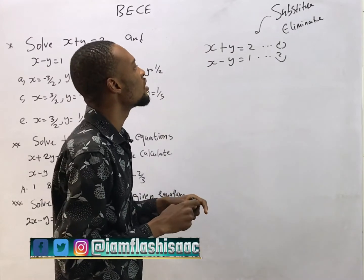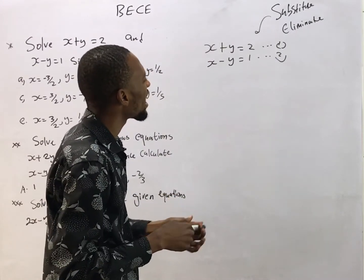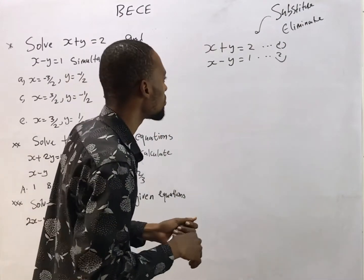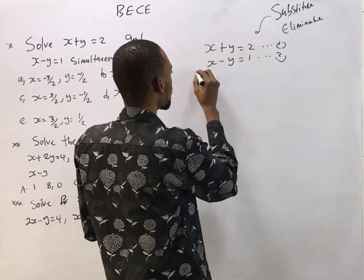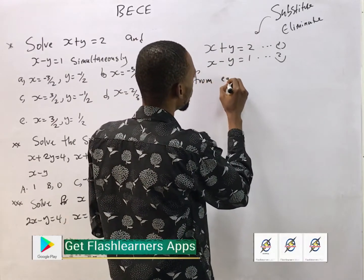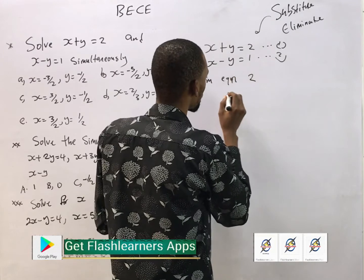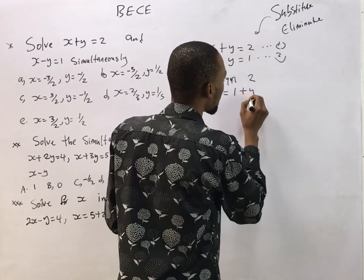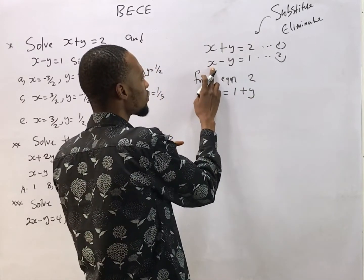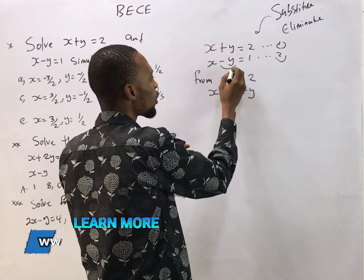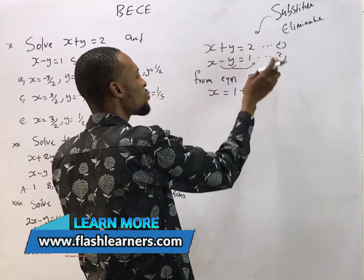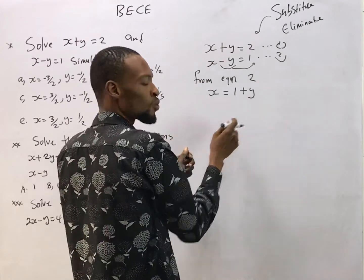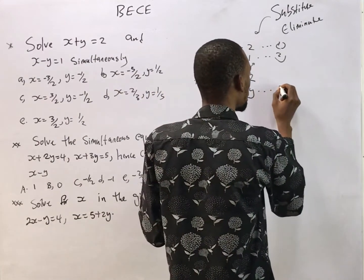If you are using the substitution method, look at one of the equations and make s or y the subject of the formula. From equation 2, s is equals 1 plus y, because if I make s the subject formula, I'm taking the minus y to the other side — it becomes positive when crossing. So s equals 1 plus y, and this is our equation 3.